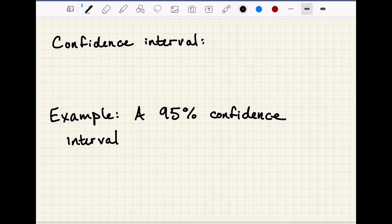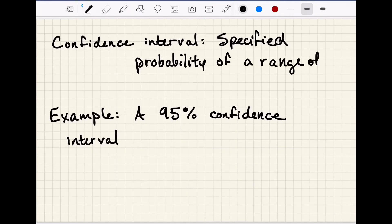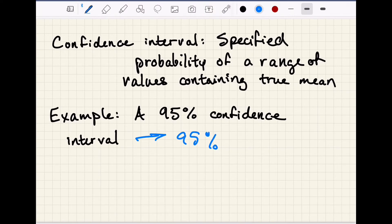When we talk about covering a certain percentage of the values, we can also refer to this as a confidence interval. A confidence interval is defined as a range of values that meets a specified probability that the true mean will fall within that range. So for example, a 95% confidence interval would mean that there is a 95% probability that the true population mean lies within that interval. And we get to choose the level of our confidence interval based on how confident we want to be in our data.